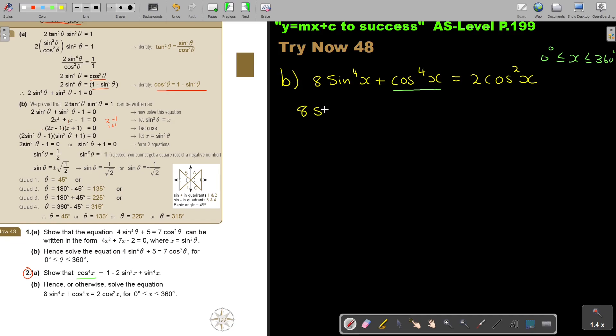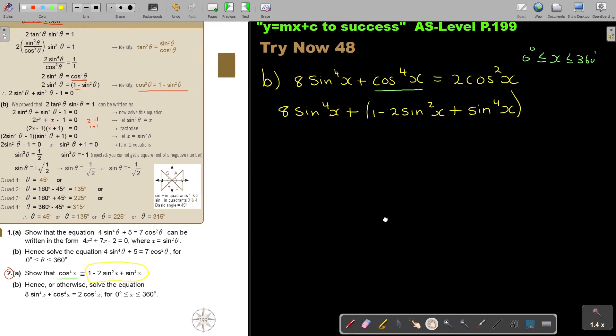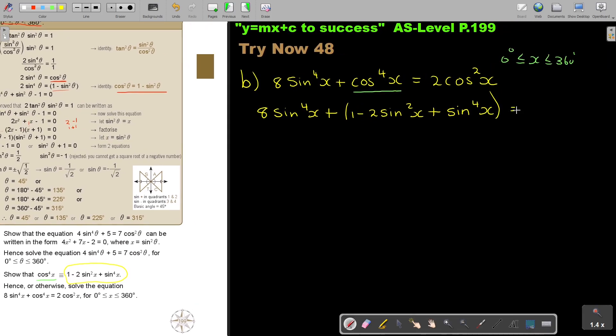So I have 8 sin to the power 4x plus, and in that place, which I proved, I'm going to put this. So it's 1 minus 2 sin squared x plus sin to the power 4x. And in this, because I see everything is in terms of sin now, I'm going to also, and can you still recall, in the place of cos squared x, I can say 1 minus sin squared x. And now I'm going to simplify.